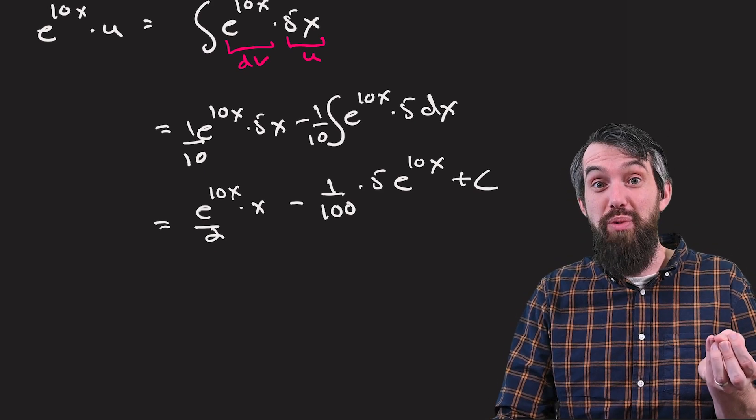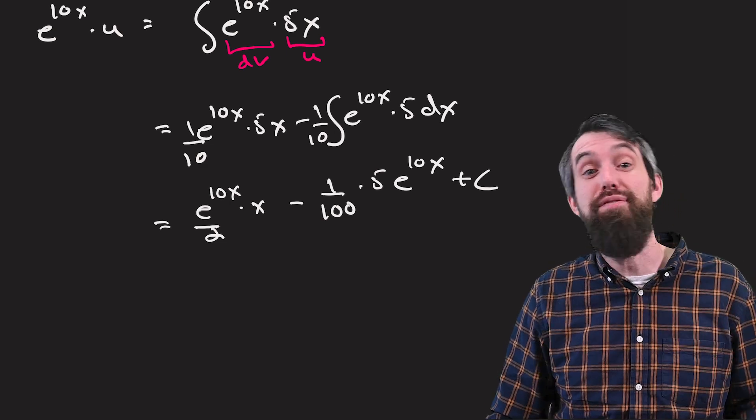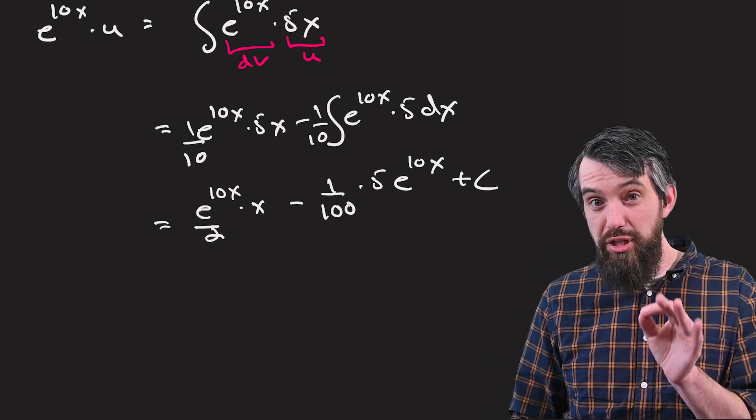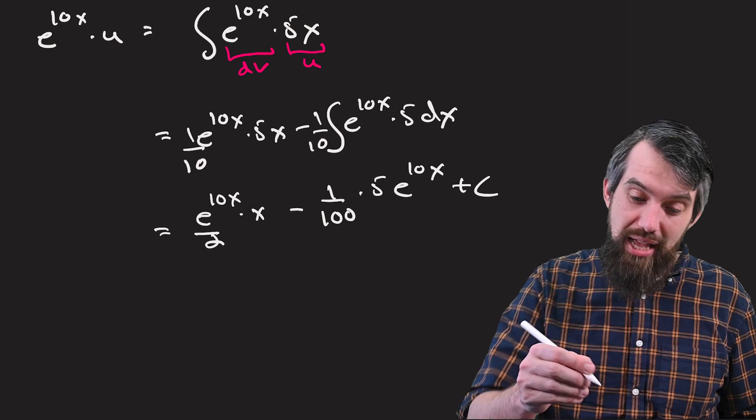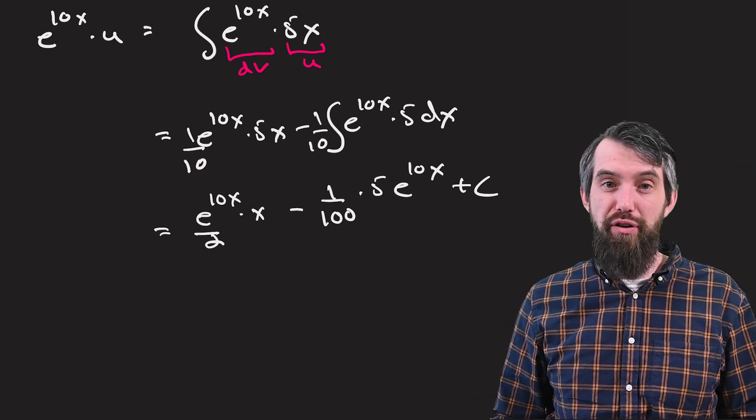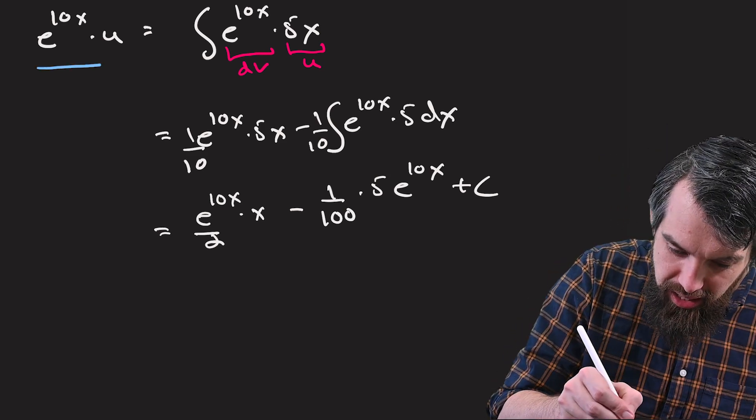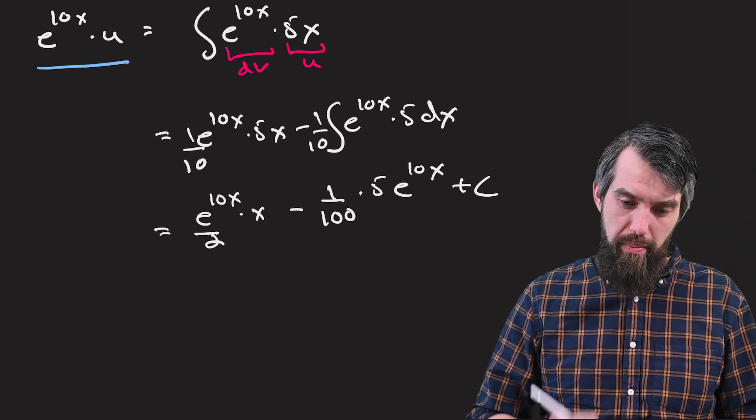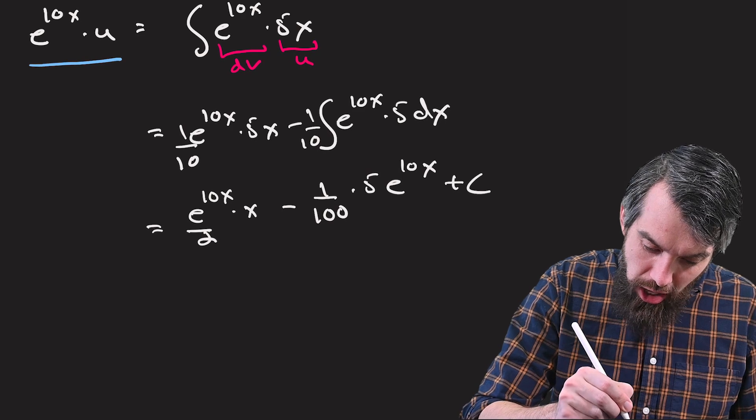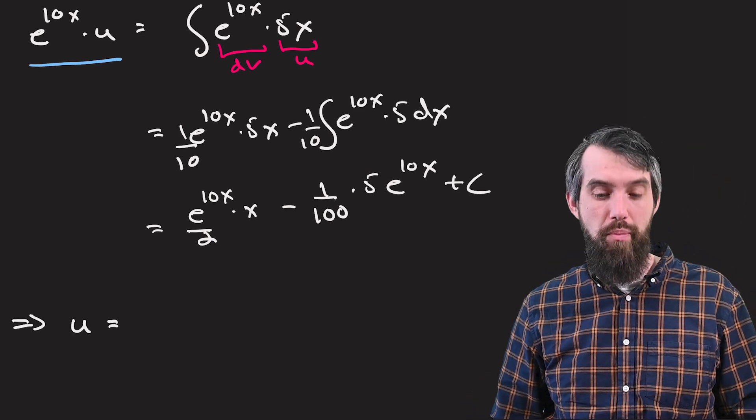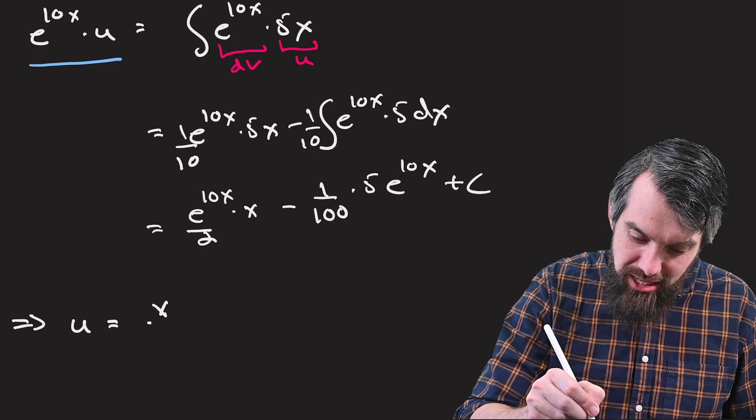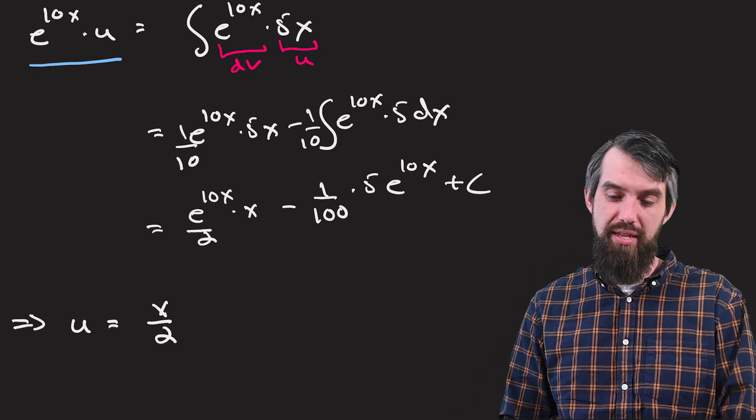And if we had an initial condition, then we would use that initial condition to determine the value of the c. Now we're close to being done, but still not quite. There's actually two things that remain. The first is that this expression that I have is not u. It's e to the 10x times u. So if I want to actually just get the value of u by itself, I have to divide out by e to the 10x. So what am I going to have? I'm going to have x divided out by 2, because I'm getting rid of the e to the 10x,